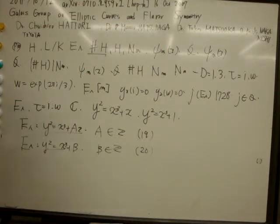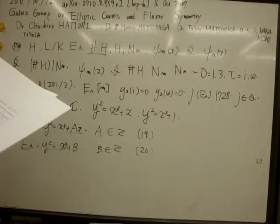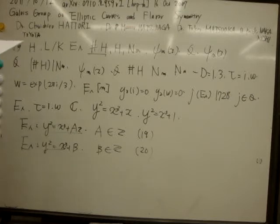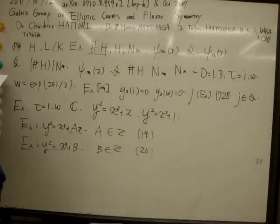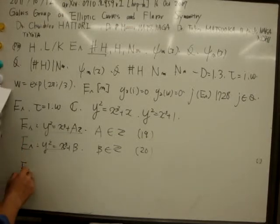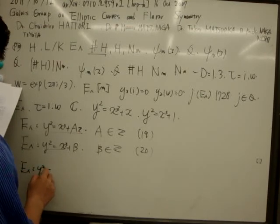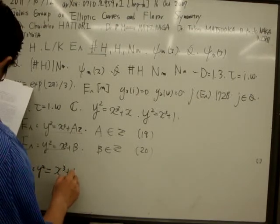As you can see, for illustration, we first pick up torsion points of the elliptic curve E lambda: y² equals x³ plus 1.